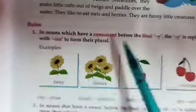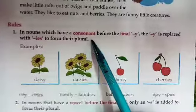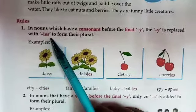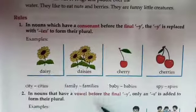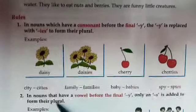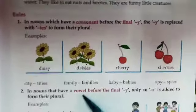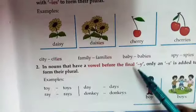Y. If there is a consonant before Y, then it will be I-E-S. And if before the Y, a vowel is there — vowel means A, E, I, O, U — then it will be only S.